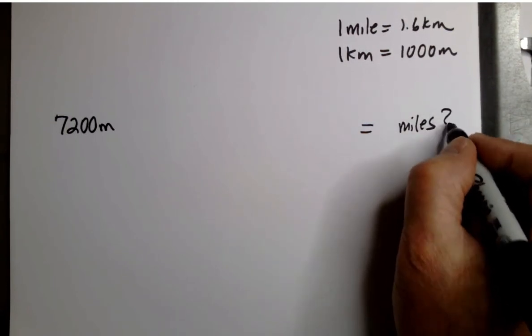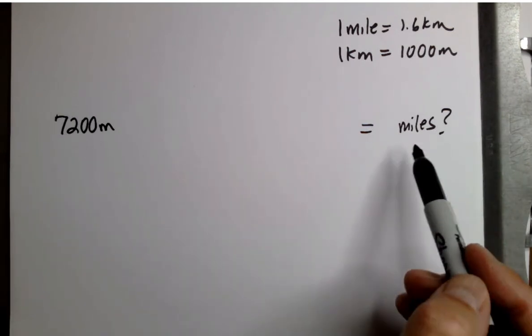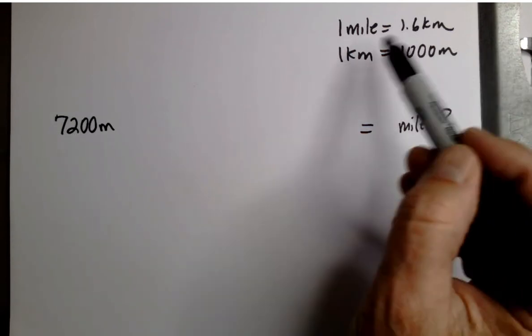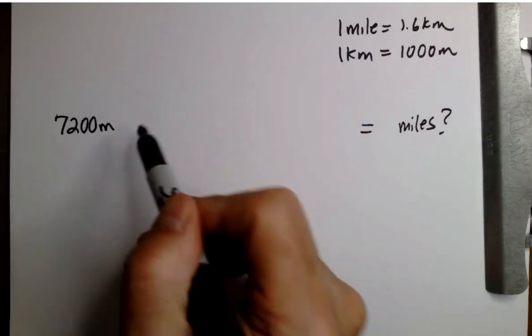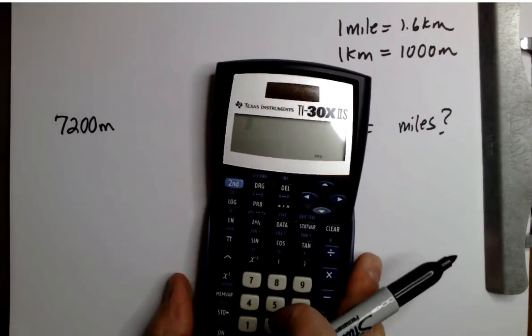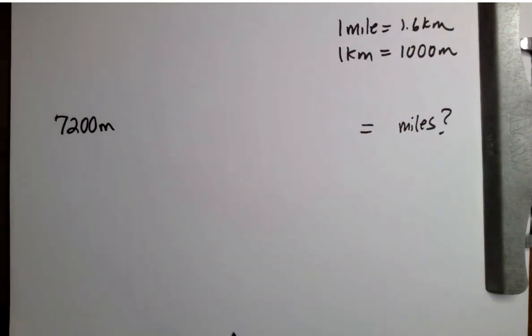So I want you to notice that what I start with goes on the left, what I'm trying to find goes on the right, and then we just simply use the conversion factors to make a bridge to get over to there, and then when we get to that point we're going to use our calculator to find the answer.